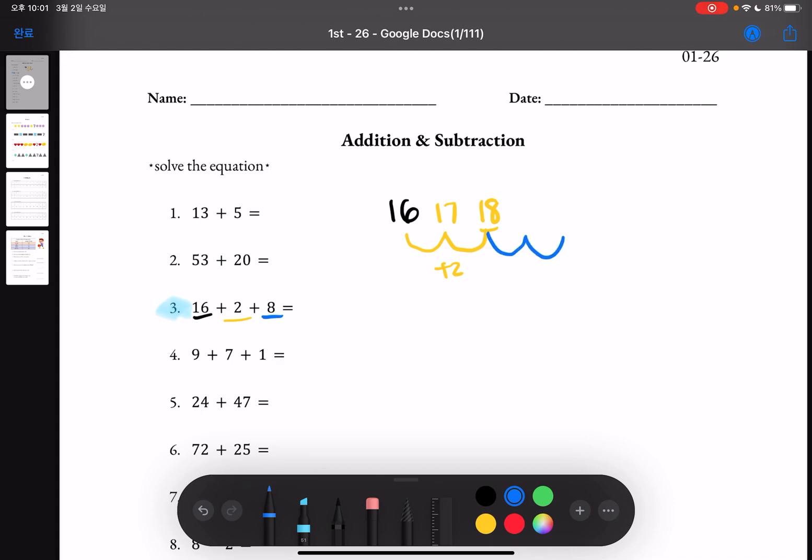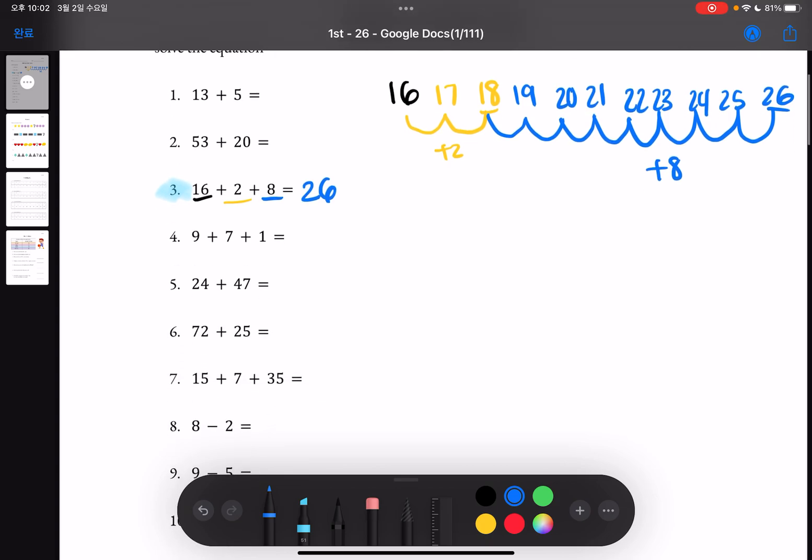1, 2 which would be 17, 18, and then add eight more to 18. So counting we will get 19, 20, 21, 22, 23, 24, 25, 26. So we know that the answer for number 3 is 26.